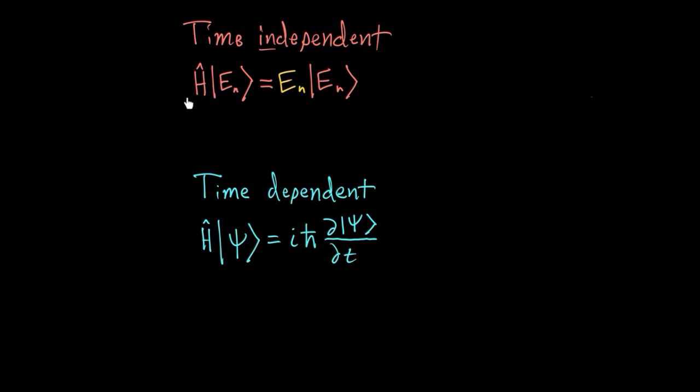And so really what you're doing with this equation, any time you're using it, you might see it in different forms, this is kind of a generic form. But any time you're using this, what you're trying to do is find the eigenstates and the eigenvalues. And if you have those, the time-independent Schrödinger equation isn't useful for you.